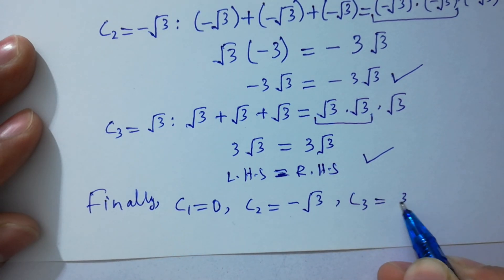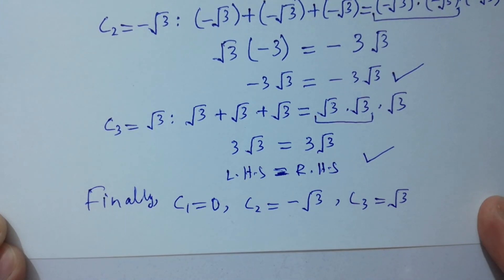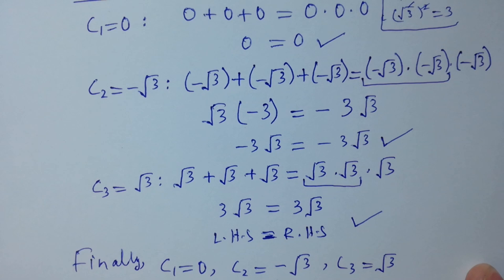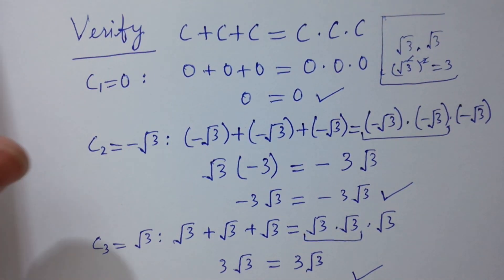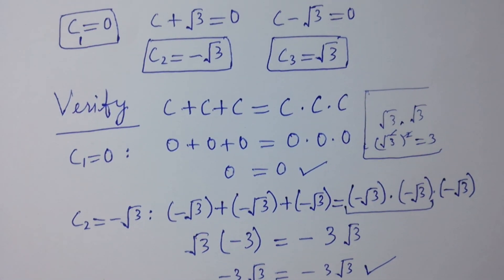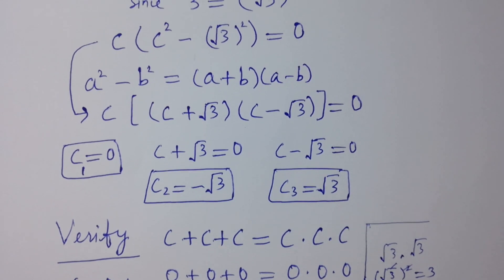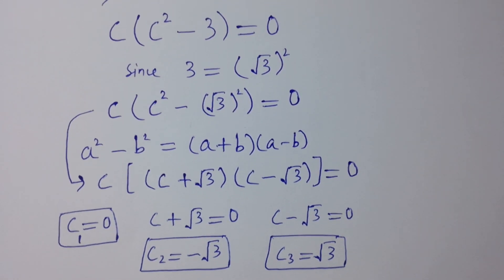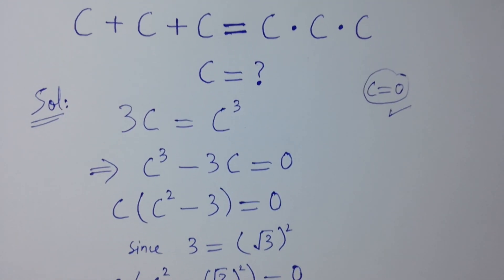So finally, c1 equal to 0, c2 equal to minus square root of 3, and c3 equal to plus square root of 3 — three solutions. Thanks for watching this video. Please subscribe to this channel to get notifications of new videos, and don't forget to share these videos with your classmates and friends so they can benefit too. Visit the playlist of this channel to learn more. Okay, bye.